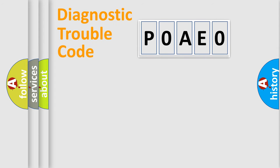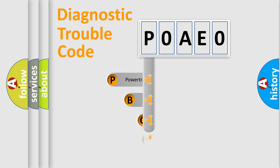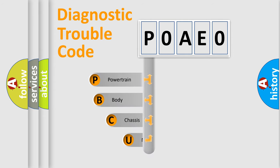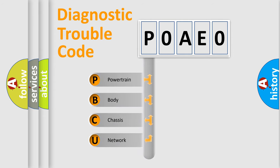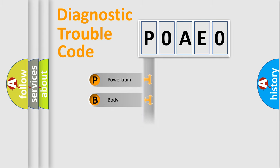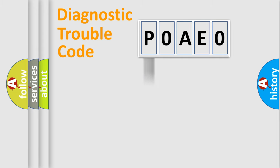Let's do this. First, let's look at the history of diagnostic fault code composition according to the OBD2 protocol, which is unified for all automakers since 2000. We divide the electric system of an automobile into four basic units: Powertrain, Body, Chassis, and Network.